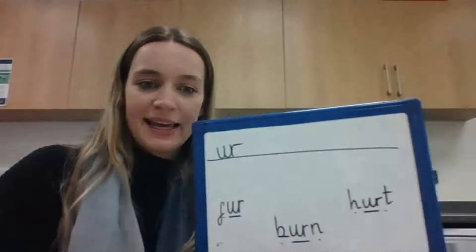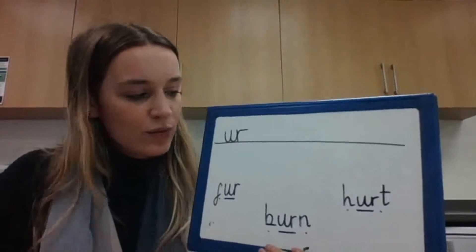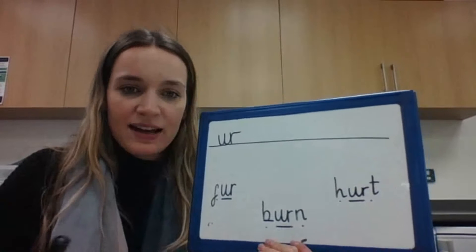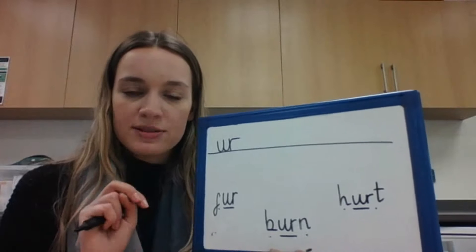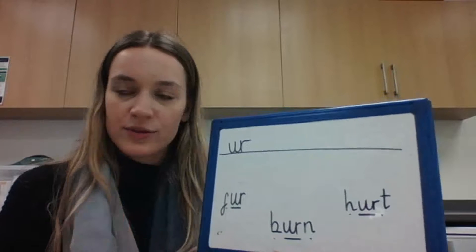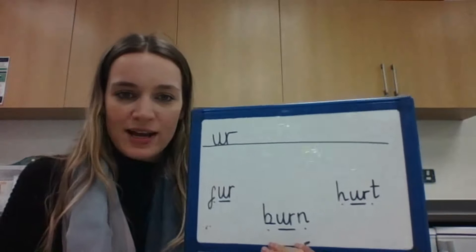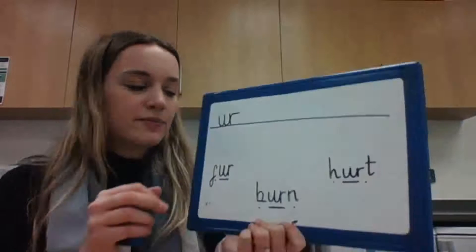Before we have a go at writing it, we are going to have a go at reading some words with this sound in. Now remember, it's the 'uh' sound and it's underlined because it's our two letters that make one sound. Let's start with this word here. There's only three letters in this word - it's a very small one.